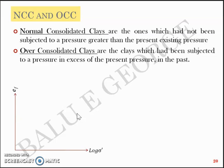To put things in perspective, let's assume that you have a two-storied building constructed at a particular site. If you demolish that two-storied building and later construct a four-storied building, that soil beneath the structure will behave as a normally consolidated clay, because that clay had been subjected to just two stories earlier and now it's subjected to four stories. That behavior is called normally consolidated clay behavior.